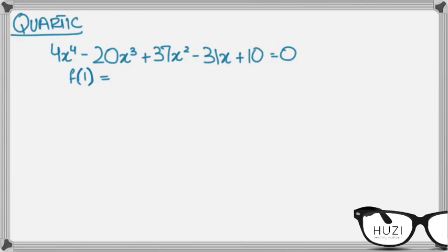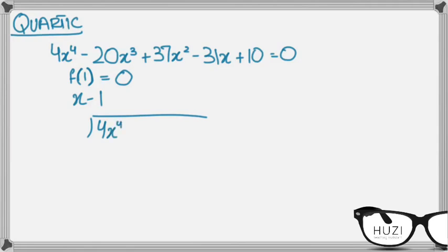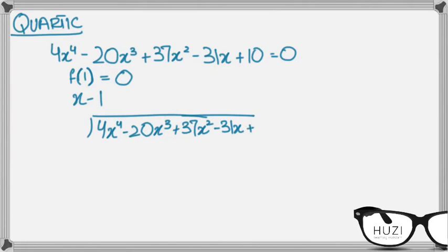So plugging in 1: 4 minus 20 minus 16 plus 37 is 21, and minus 31, plus 10 — this all adds up to 0. So x minus 1 is a root. Now to find the cubic factor, I have the quartic 4x to the power of 4 minus 20x cubed plus 37x squared minus 31x plus 10.